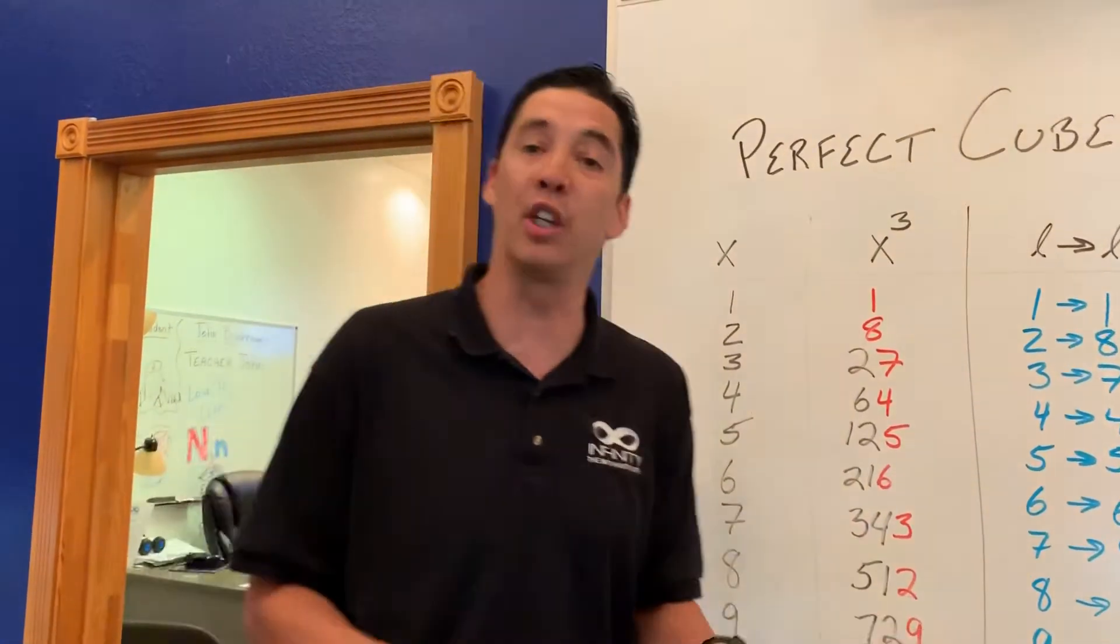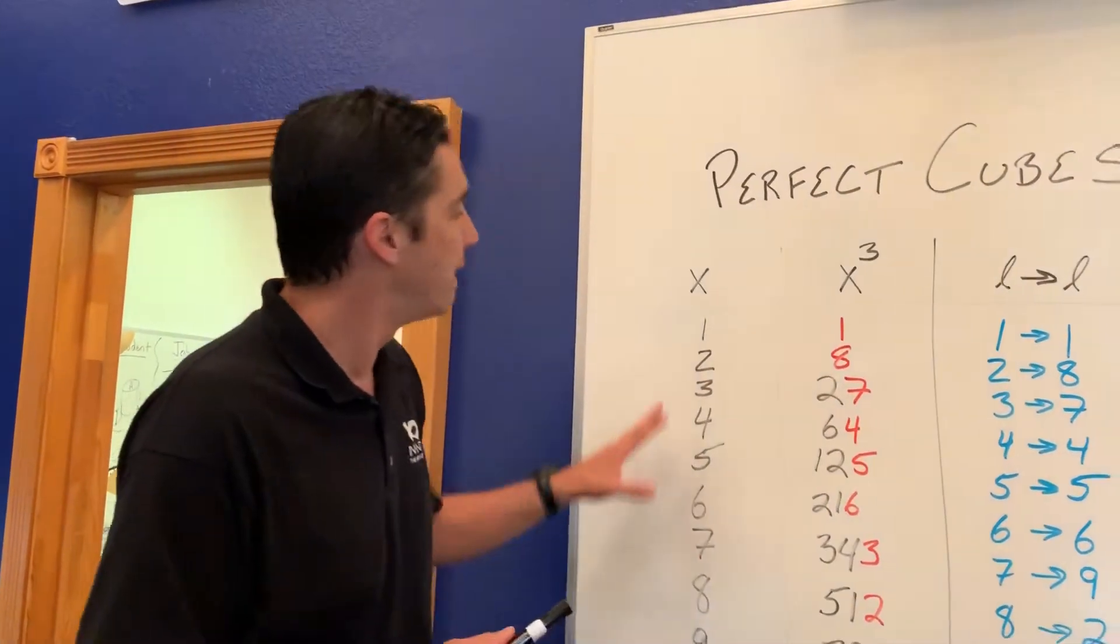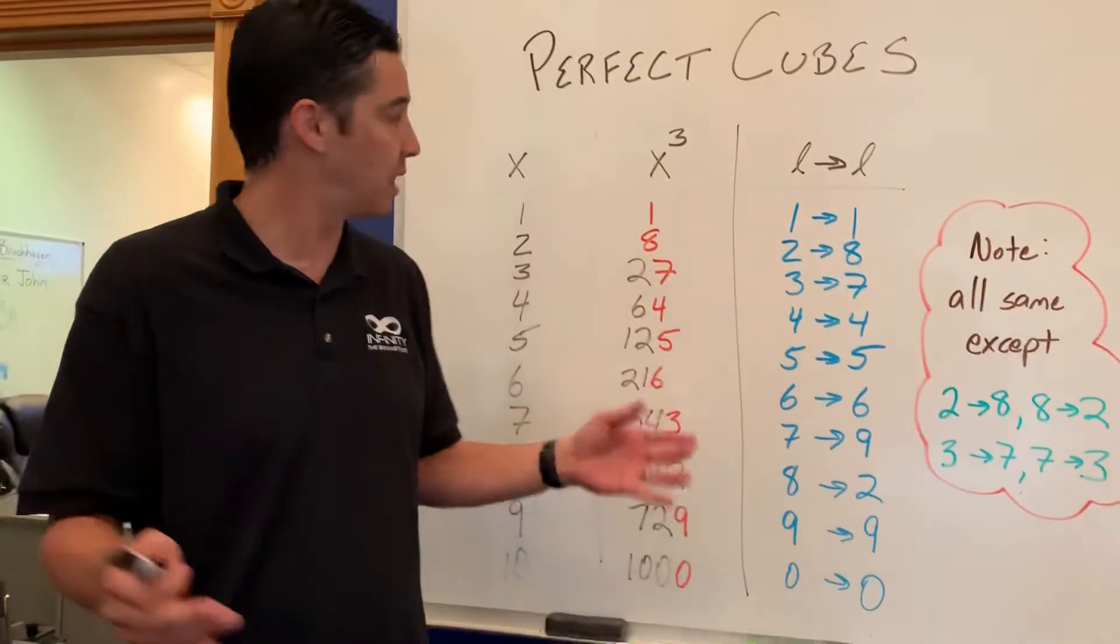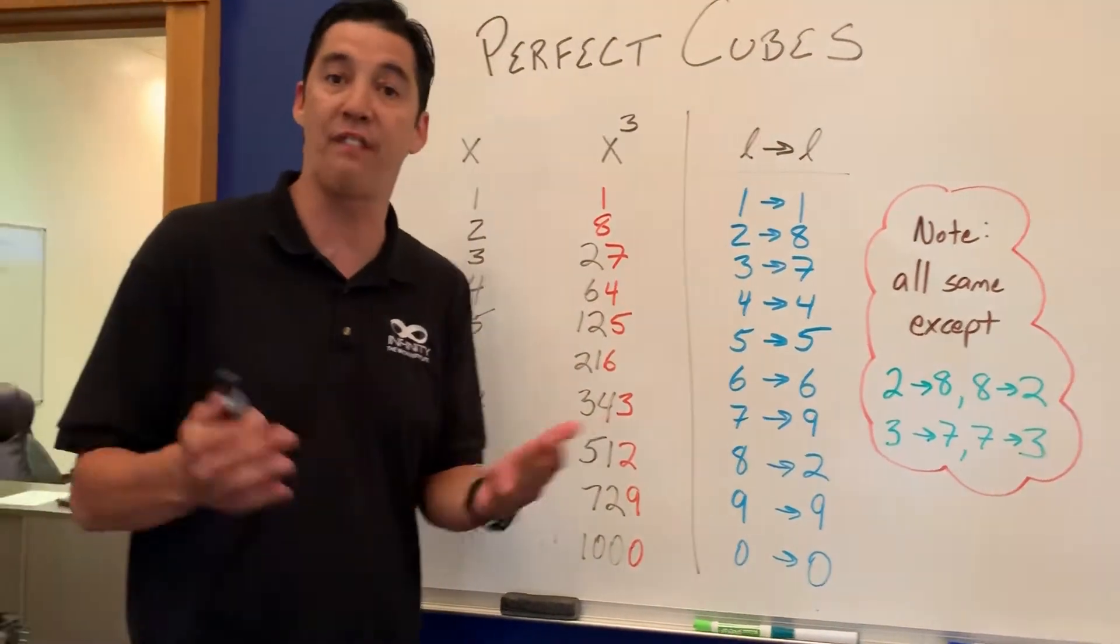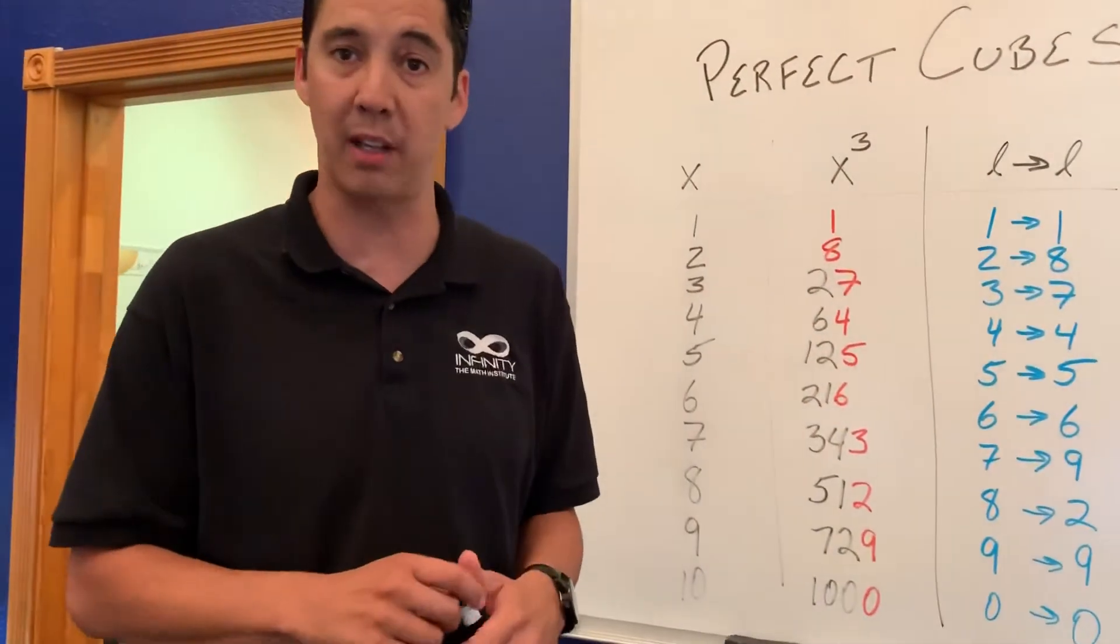The first thing you have to do and what all of our students always do is memorize their perfect cubes: 1, 8, 27, 64, 125, 216, 343, 512, 729, and 1000.